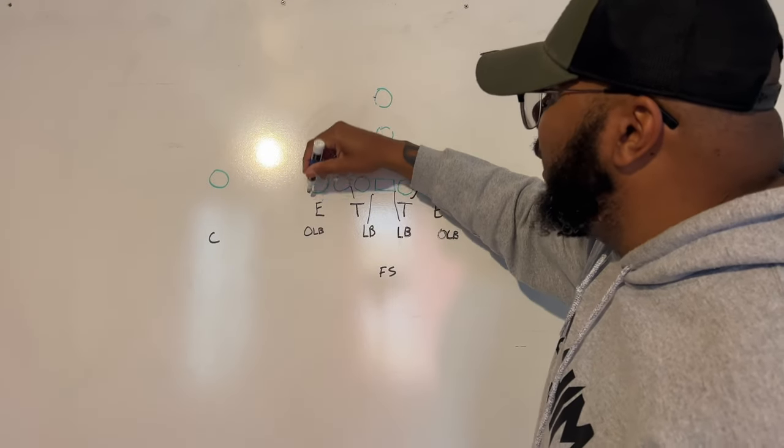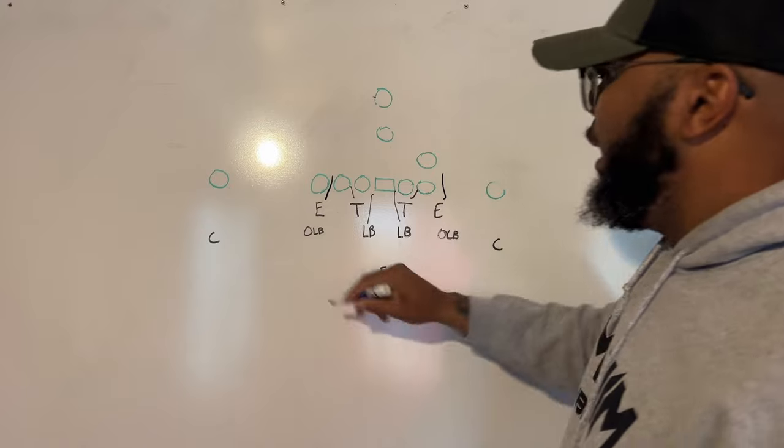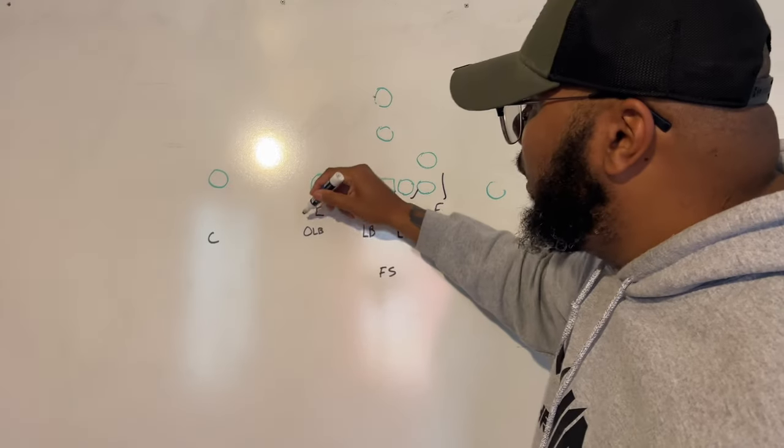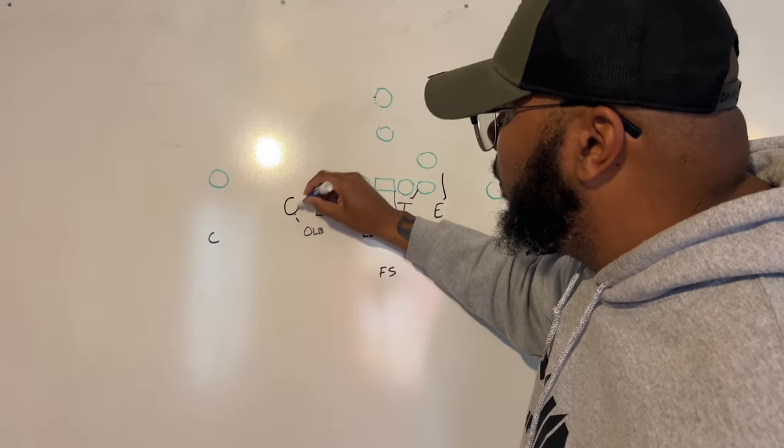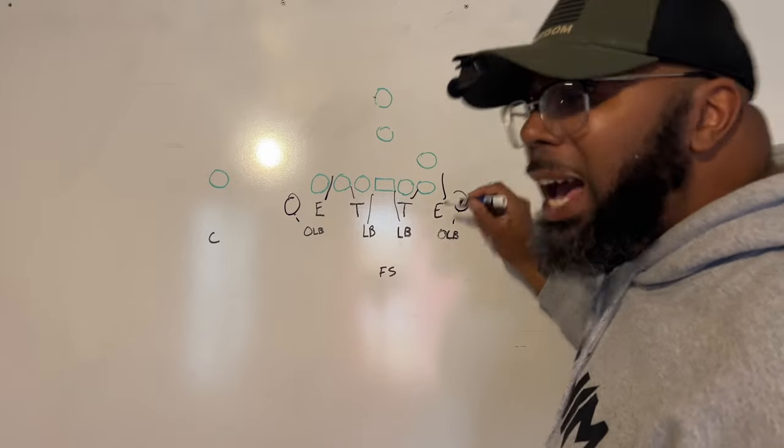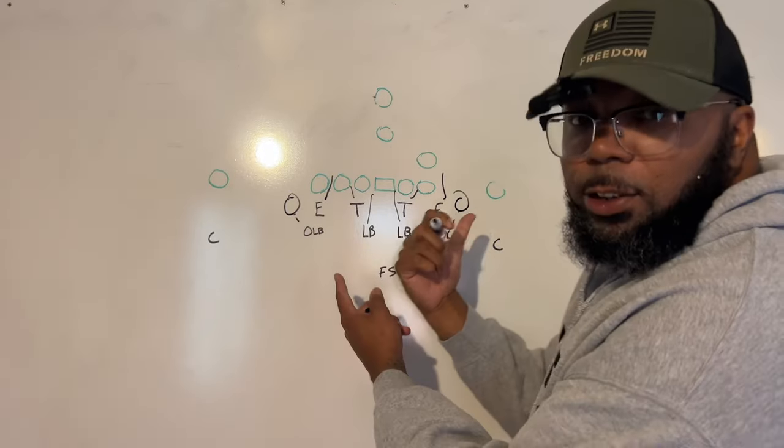We're going to have our defensive ends. They're going to attack the C-gap. And our outside linebackers, they're going to creep up. And basically, this looks like a 6-2 defense now.